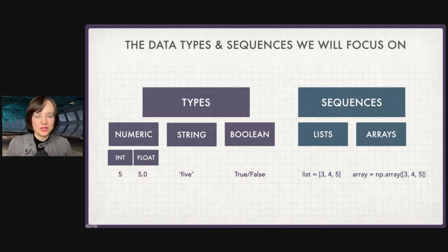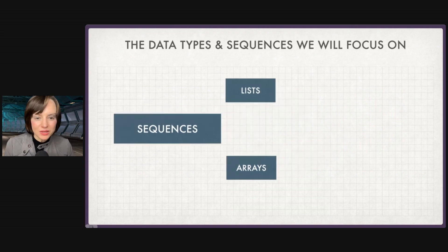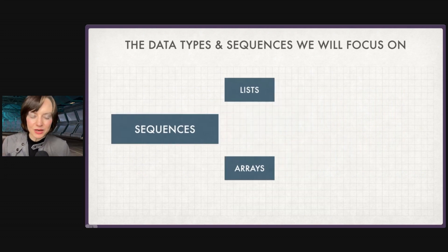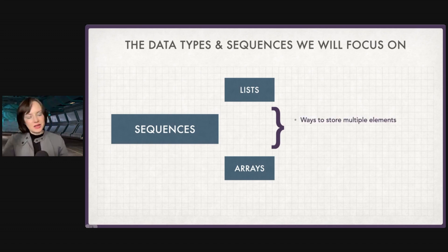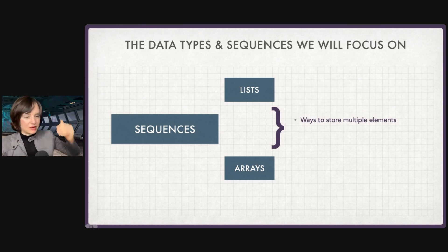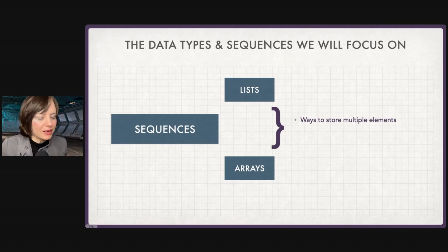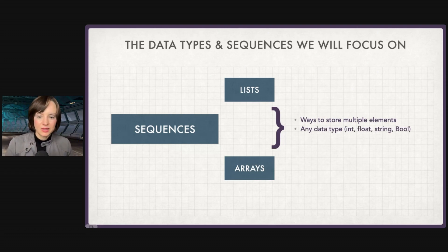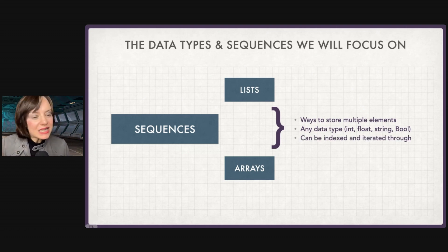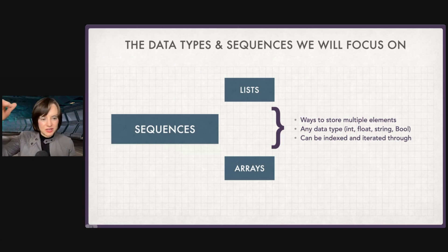Let's move over to sequences — lists and arrays. All of these are ways to store multiple elements: the ages of people on my soccer team or the heights of students in my class. They can contain any data type — a bunch of ints, floats, strings, bools, etc. And they can be indexed and iterated through, meaning we can say this is in the first position, this is in the second position, and go through all of them one at a time.